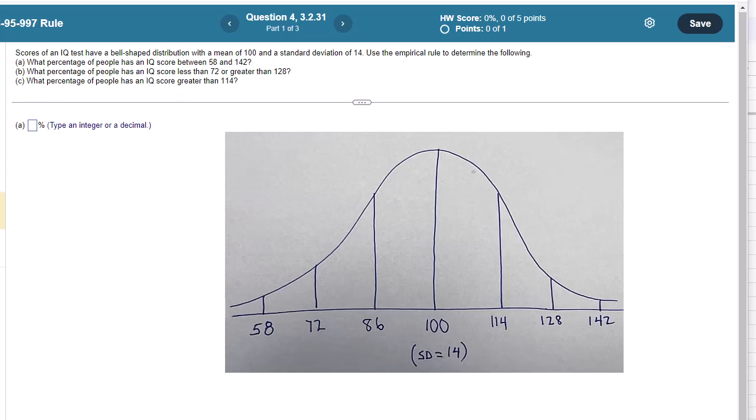So what's this first one? What percent have an IQ score between 58 and 142? Well, that is what? That's out three standard deviations. So that is the 99.7%.